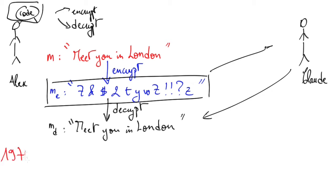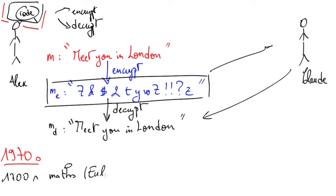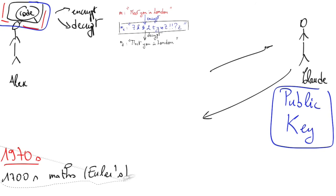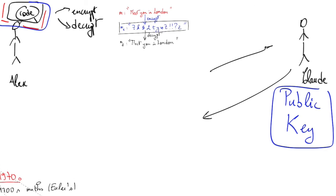Until the 1970s, people thought that no encryption was possible without a previous private meeting. But thanks to some 18th century mathematics — specifically Euler's work — it is now possible for Claude to publish a public key, enabling everyone to send him messages that only he can decrypt. He does not need to meet with Alex to agree on a code.